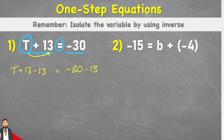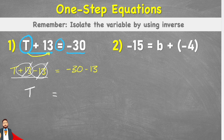And now when I look at my equation, I can see that on this left-hand side, I have a plus 13 and a negative 13. Plus 13 and negative 13 will cancel themselves out and we're going to end up with just t on its own. So therefore t equals negative 30 minus 13.